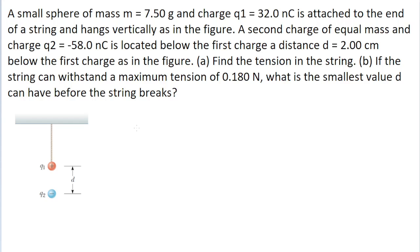In this problem, we have a positively charged sphere that is hanging from the ceiling by a rope. As given in the problem, this sphere has both mass and an electric charge. As we can see from the figure, a second charged particle, this one a negative charge, is held near the positively charged sphere at a distance of d away from the positive one.